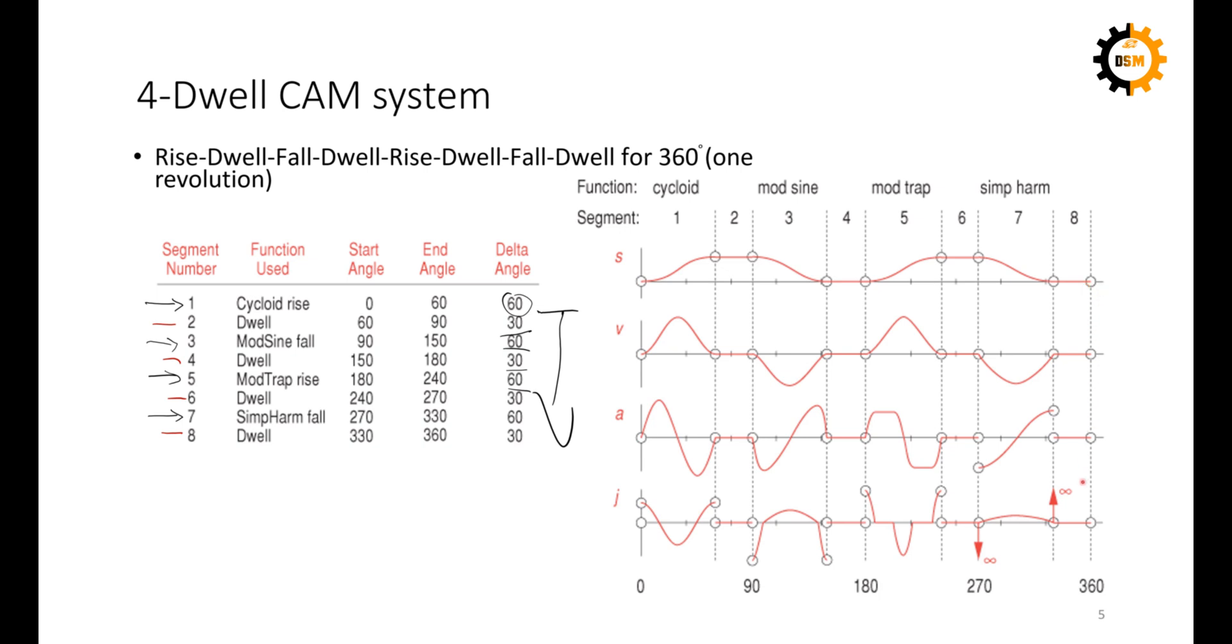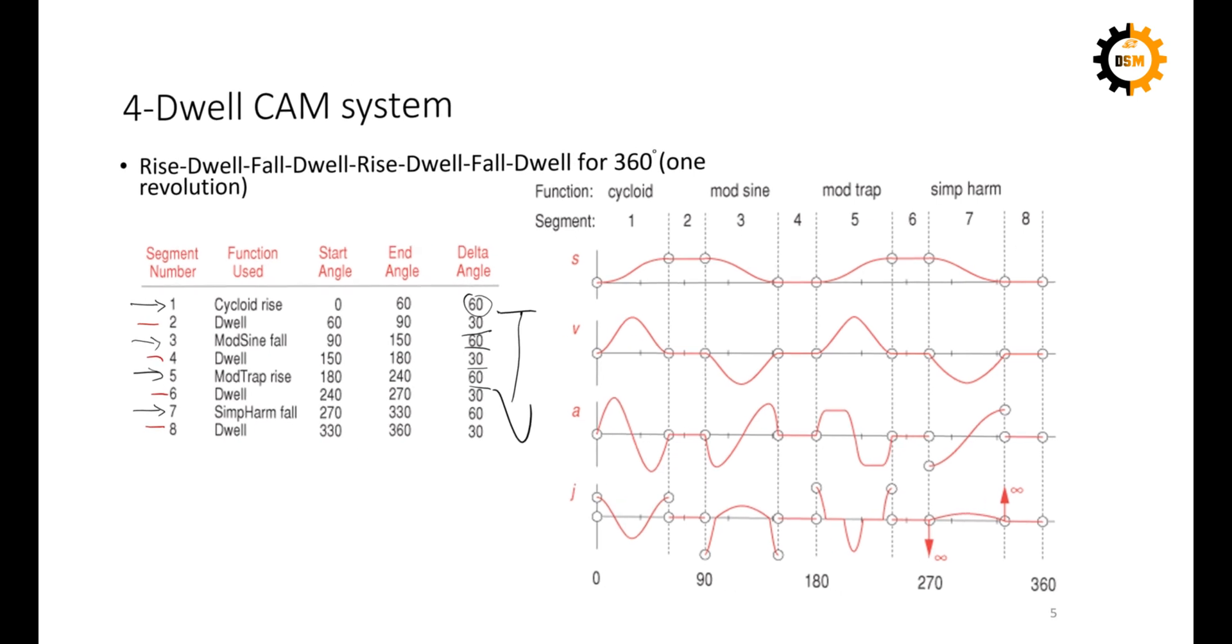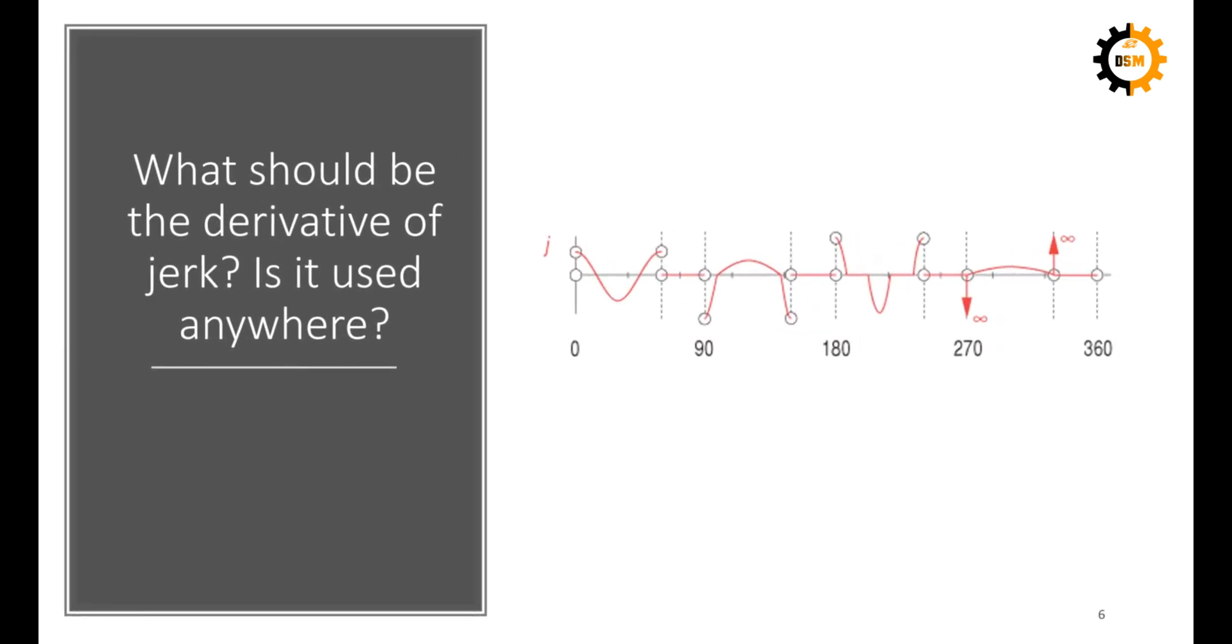And here you see that how SVAJ diagram helps you in determining how your CAM follower mechanism will behave, and these are the base plots which are very important when you are designing a CAM follower mechanism. So you have seen that jerk is the derivative of acceleration. So if we further take the derivative of jerk, what will it be called, and what do you think where it should be used?